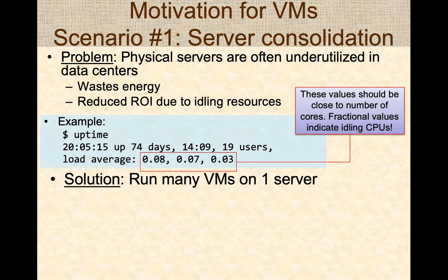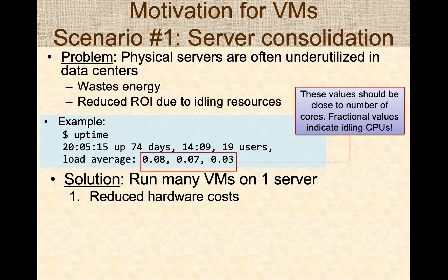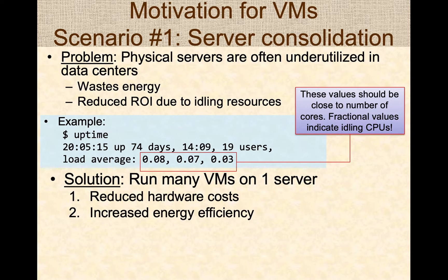The solution is to run many virtual machines on a single server. Rather than running just one program, you can run virtual machines for multiple users on a single server to improve utilization and return on investment. By consolidating multiple virtual machines onto a single server, you reduce overall hardware cost — instead of buying separate machines for each operating system, you run multiple operating systems on one machine. You also increase energy efficiency, as the hardware is now effectively utilized.